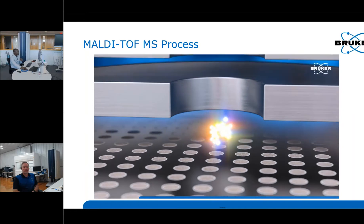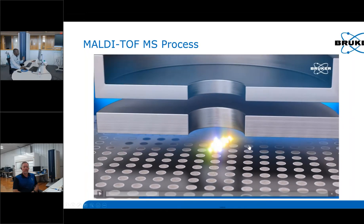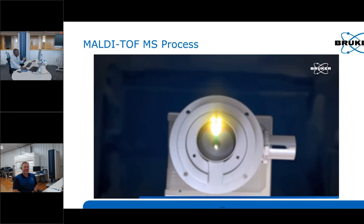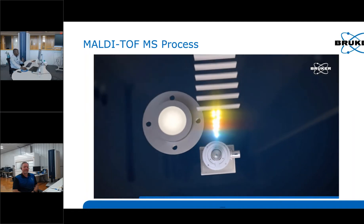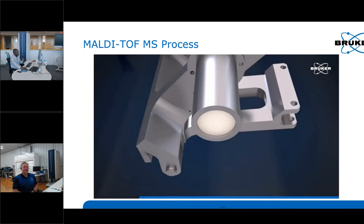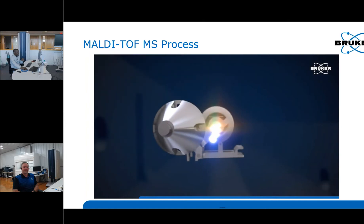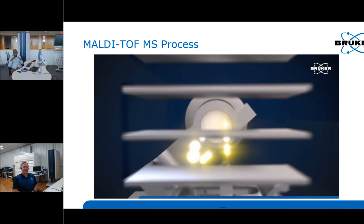After the ionization step, high voltage is applied on the target plate to accelerate ionized particles or ionized molecules to the detector. That's the first step — the ionization step. The next phase is time-of-flight mass spectrometry, in which the ions separate by mass because you have a constant voltage across the whole plate and a constant flight tube where the ions fly all the way to the detector.